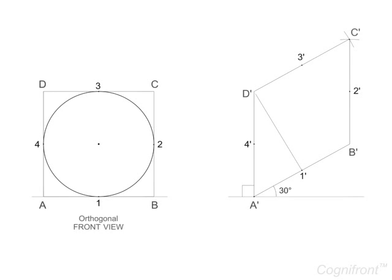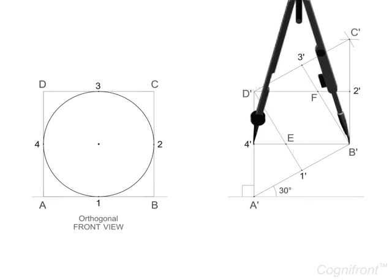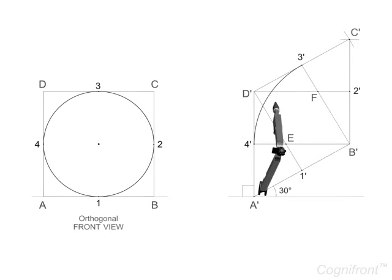Now join 1'-D' and 4'-B' and mark the intersecting point as E. Similarly, mark intersecting point F on B'-3' and D'-2'. Let's take B' and D' as centers and B'-4', D'-1' as radii.